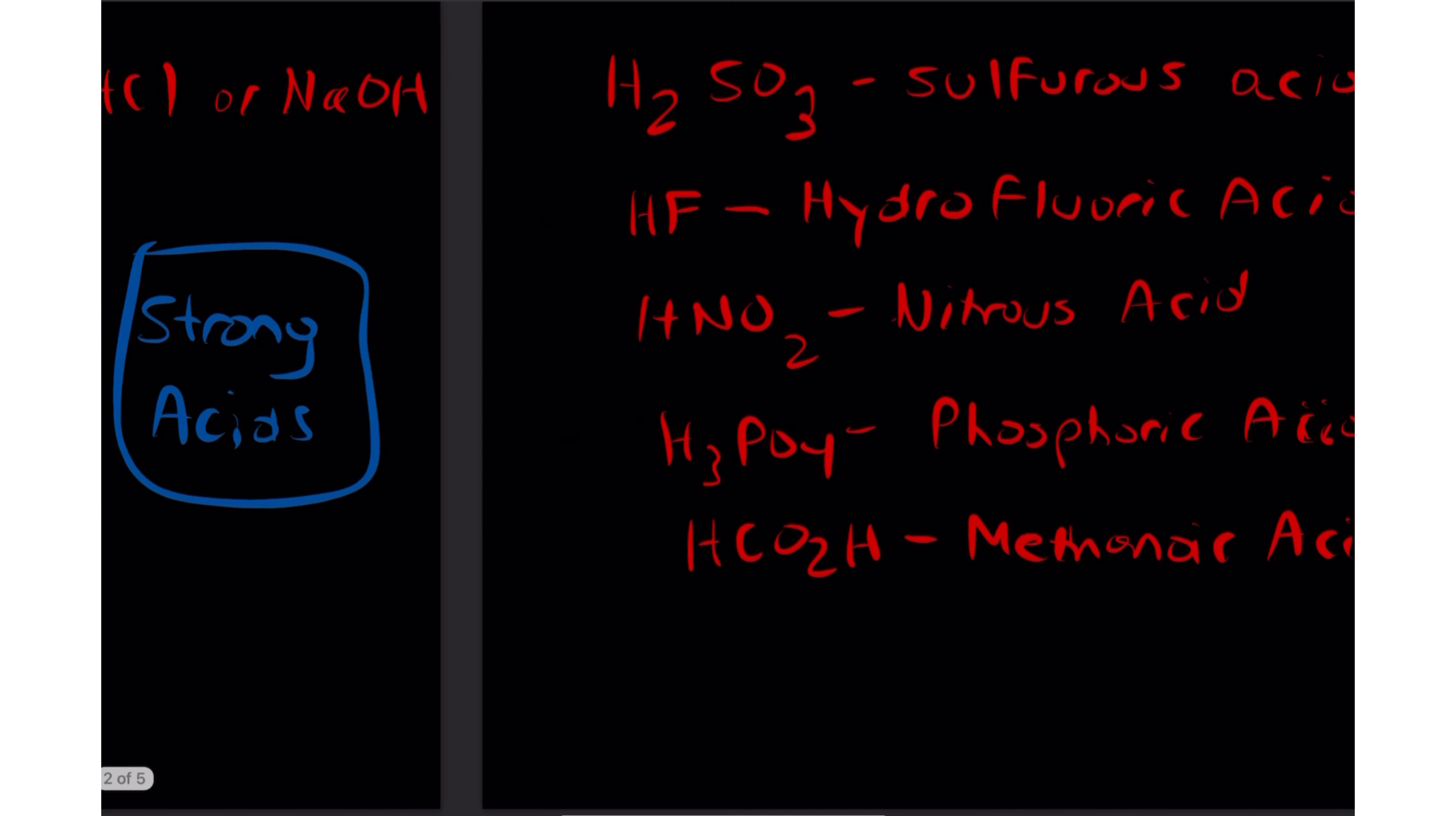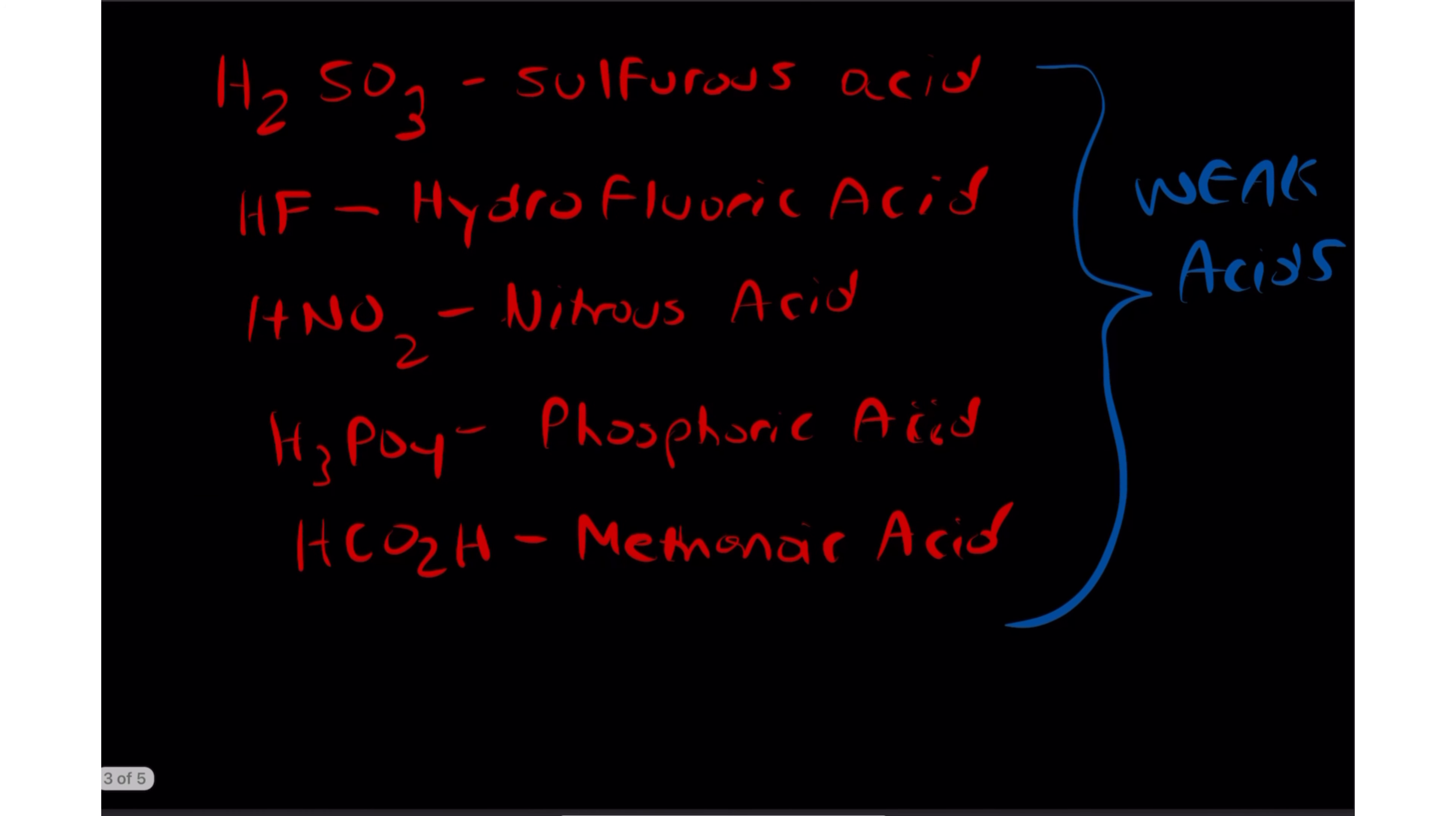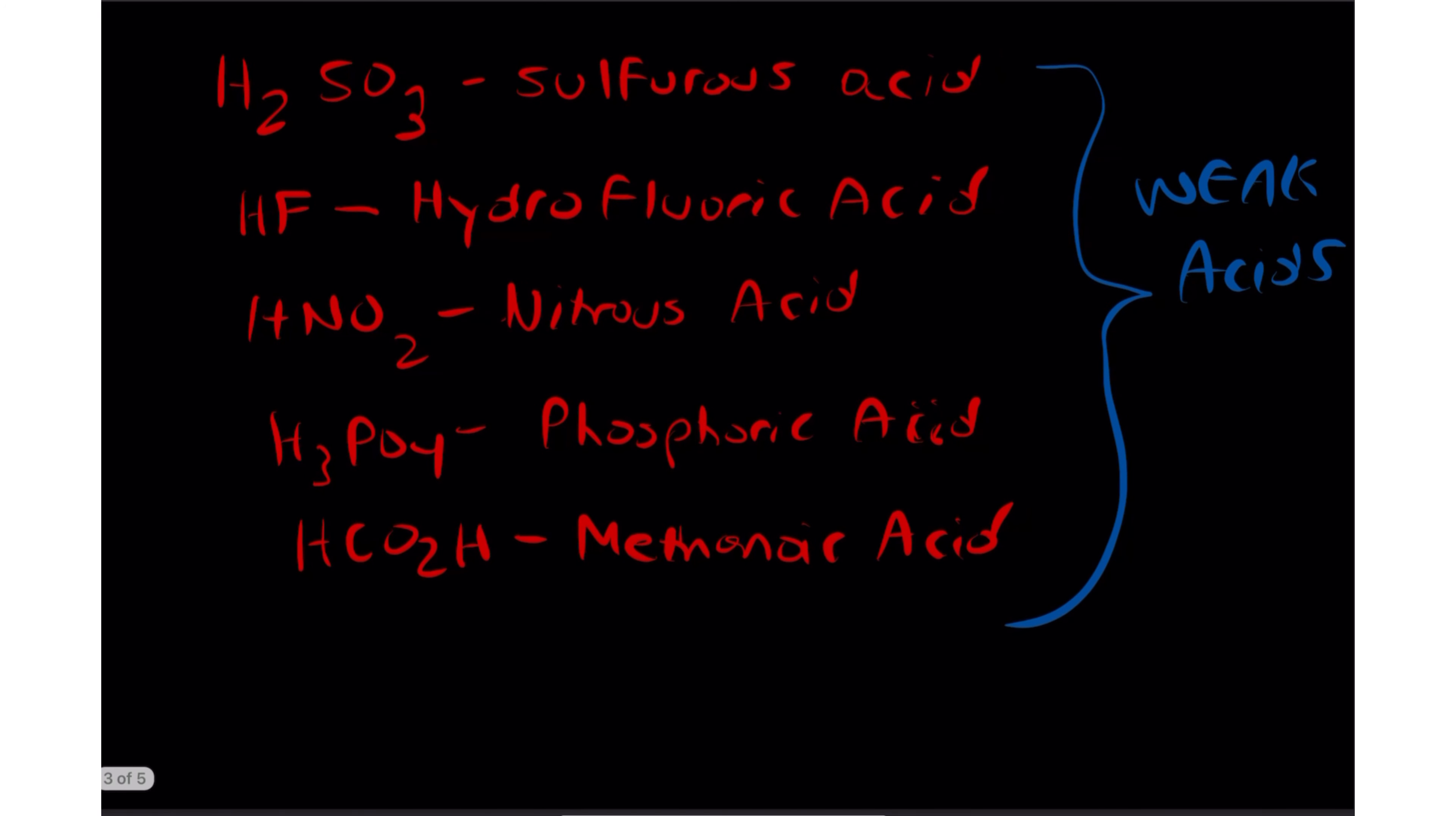Now it's like, okay Dre, we have to memorize all these acids. Well, what I like to do is, these are the weak acids. What I like to do is memorize all the strong acids, and then everything else is considered a weak acid. So all you have to do is memorize HCl, HNO3, HI, HClO4, HClO3. Memorize those, and if you see anything else that aren't those strong acids, then they're considered weak acids. That's all.